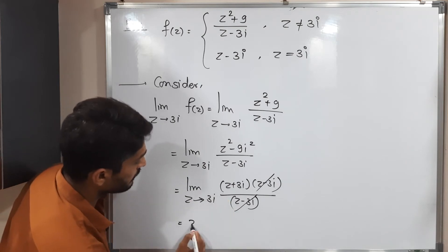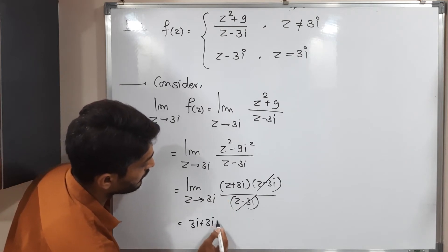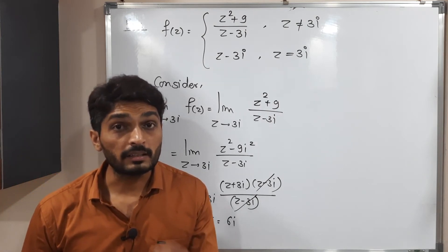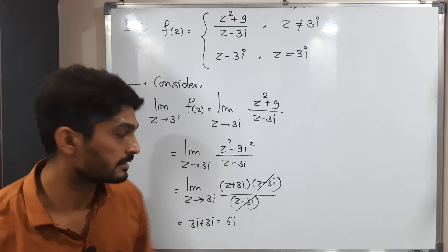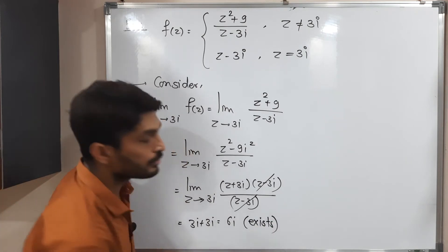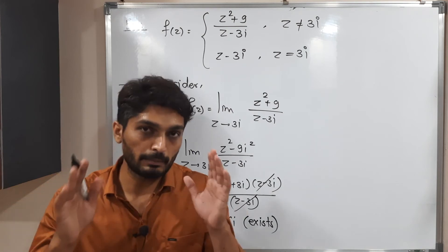So we can put z is equal to 3i. So what will happen? 3i plus 3i, 6i. So this is the value of limit. So the main thing is that limit exists. That this is a very important thing we have got. Getting that limit exists. So the first condition is satisfied that limit exists.